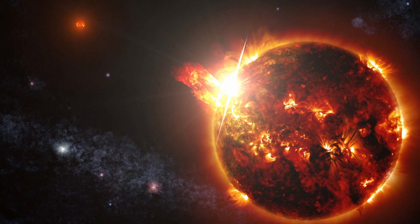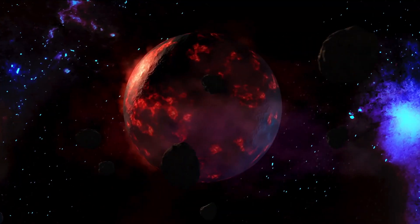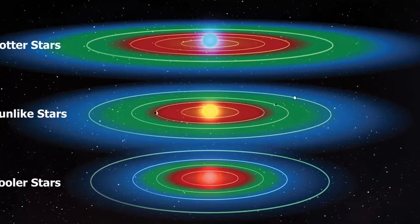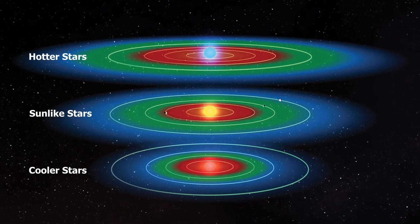This means that Proxima b is much closer to its star than Earth is to the Sun. However, because Proxima Centauri is a red dwarf star, which is significantly smaller and cooler than our Sun, Proxima b orbits within its star's habitable zone.